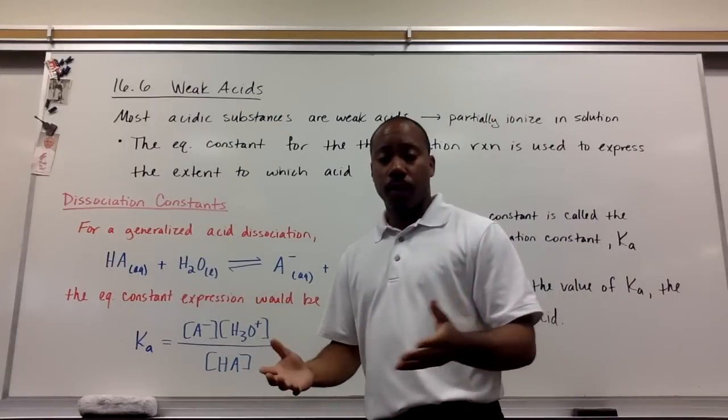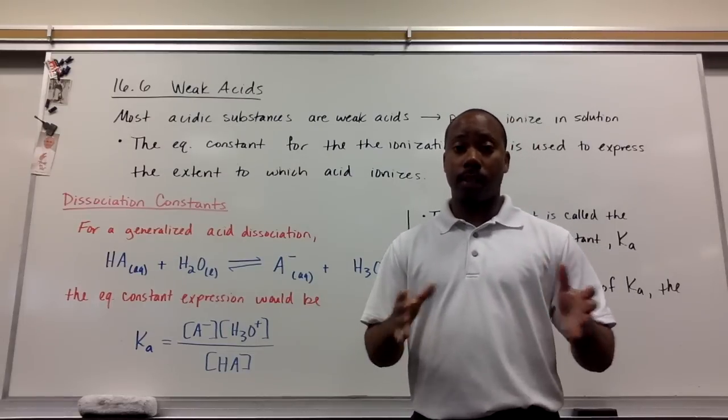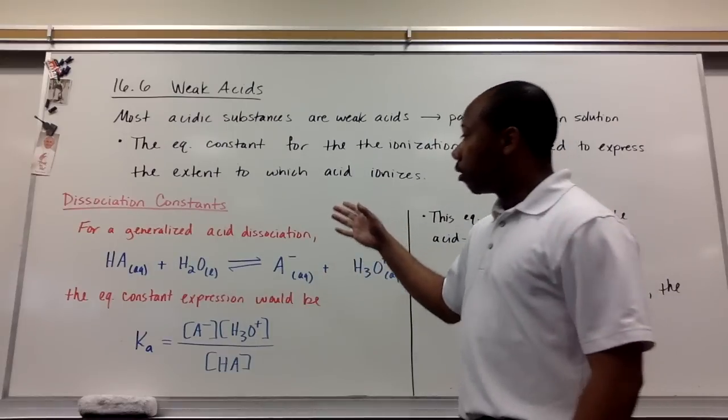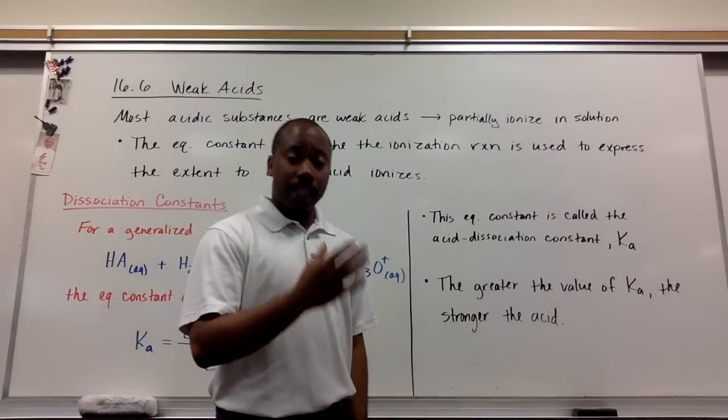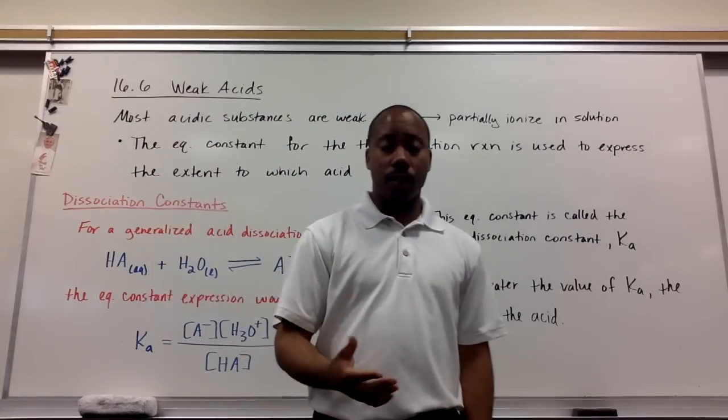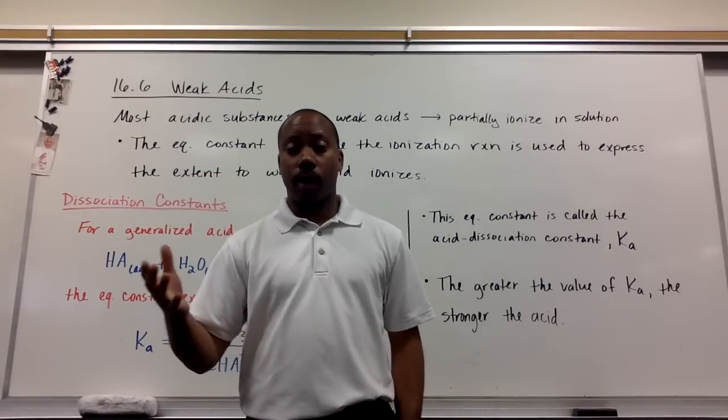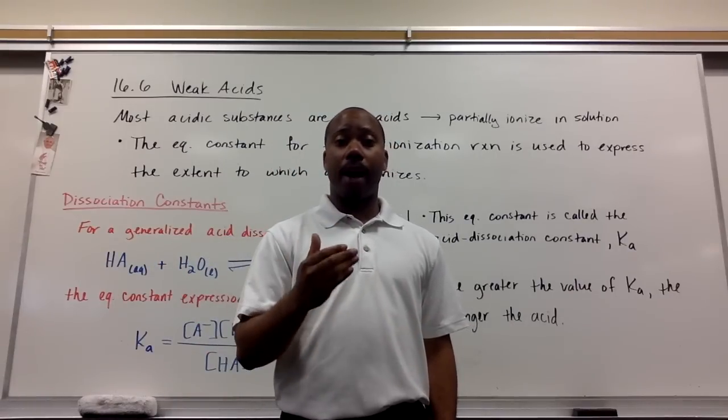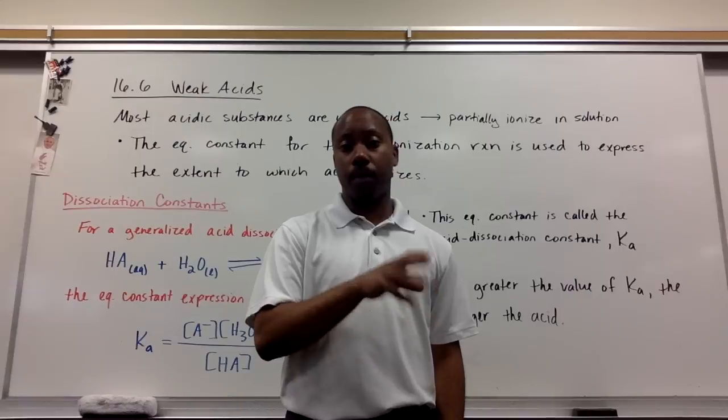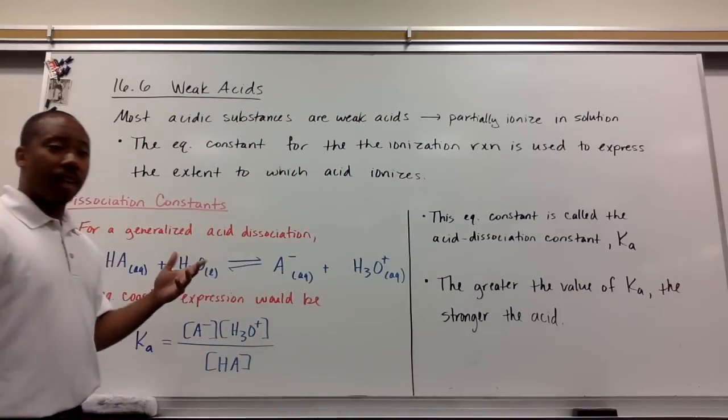To be a weak acid, we define it as an acid that partially ionizes in solution. Strong acids completely ionize in solution. The equilibrium constant for the ionization reaction is used to express the extent to which an acid will ionize. Weak acids don't ionize very much. We use K values to determine how one acid ionizes more than another acid if they're both weak acids.